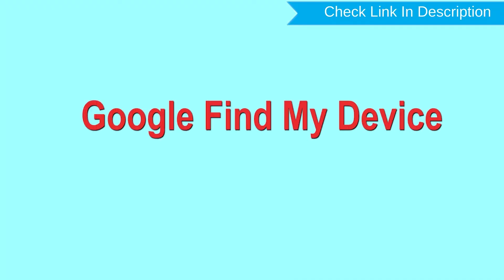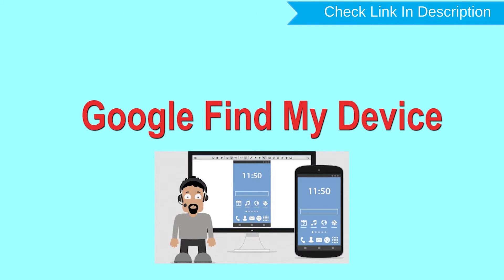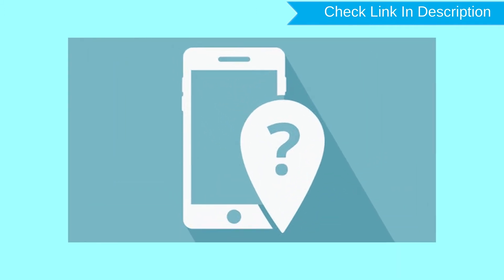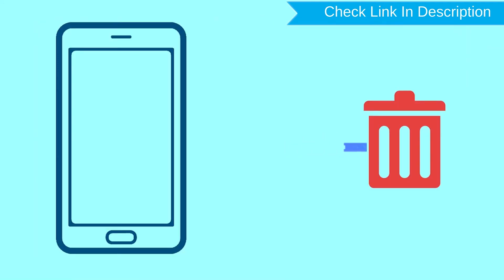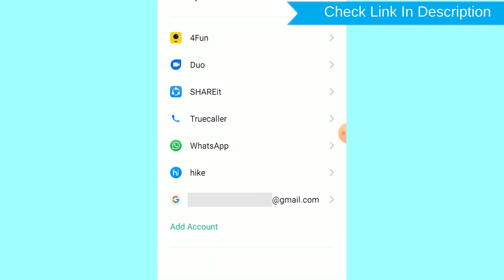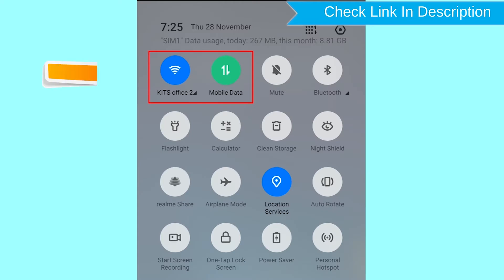Hard reset with Google Find My Device. This is the best method to reset your Android phone remotely. This method is useful when you lose your phone or are not able to access your mobile. This method also deletes all your Android phone data. After your device has been erased, you can't locate it. You can only use this method if you already added a Gmail account to your phone and have an active internet connection.